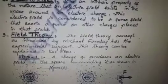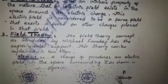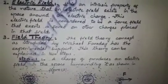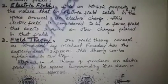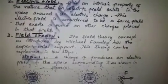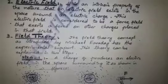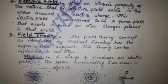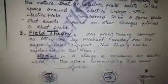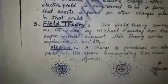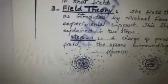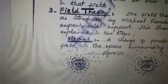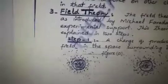This field theory concept was introduced by Michael Faraday. There are two steps in this field theory. Step 1: a charge Q produces an electric field in the surrounding space, as shown in figure A.